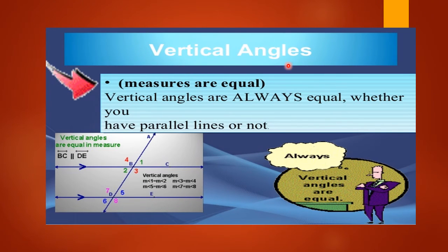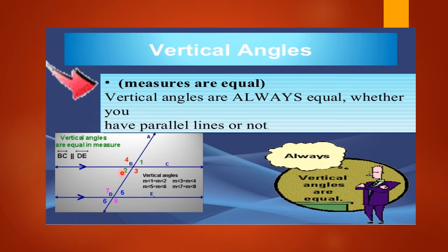Then vertical angles — their measures are equal, as we have discussed earlier. Vertical angles are always equal whether you have parallel lines or not; they are equal whenever lines intersect each other. In this example with two parallel lines and one transversal, they make vertical opposite angles. So angle one equals angle two, angle three equals angle four, angle five equals angle six, and angle seven equals angle eight.